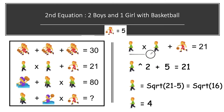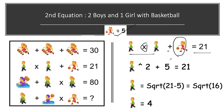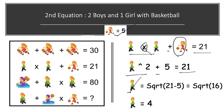In the second equation, we have two boys with a multiplication sign between them, plus a girl playing with basketball, equal to 21. We know the value of a girl playing with basketball is 5. Looking carefully, two boys with a multiplication sign becomes boy squared, so boy squared plus 5 equals 21.